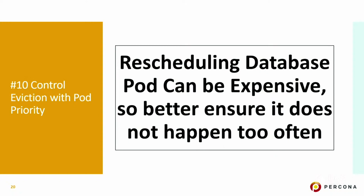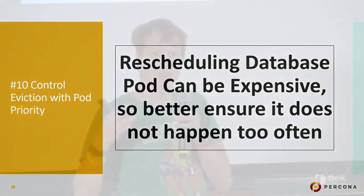Number ten: control eviction with pod priority. Databases, especially many legacy ones, do not like to be suddenly evicted — they often have to re-synchronize and do other work to rejoin the cluster, which may degrade performance or availability. So make sure that doesn't happen more than absolutely necessary.